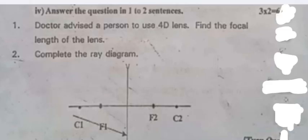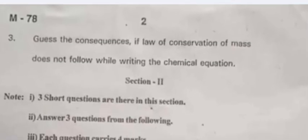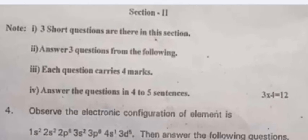Doctor advised a person to use 4D lens, the focal length of the lens. This is given for two marks. Complete the ray diagram. This is also for two marks. Guess the consequences if law of conservation of mass does not follow while writing the chemical equation. Section 3: Short answers. Three short questions are given.